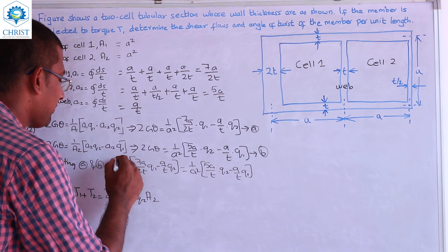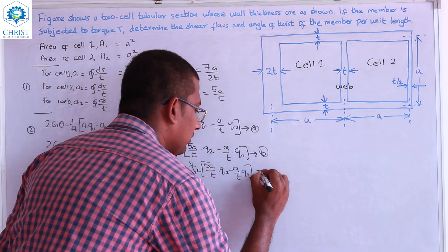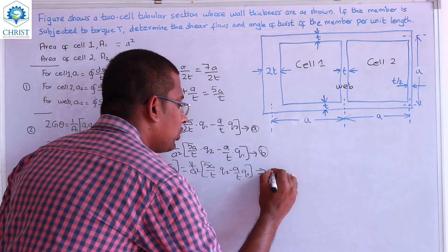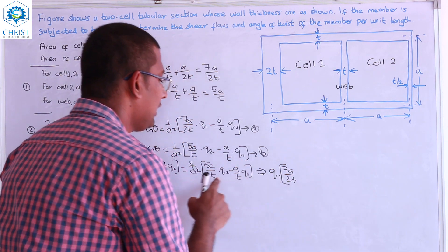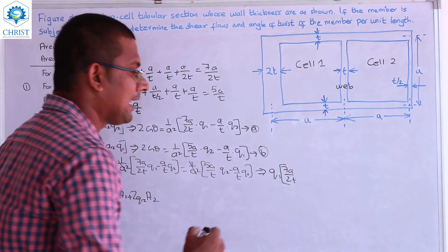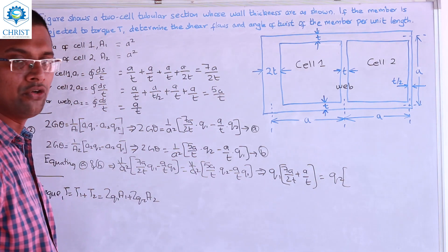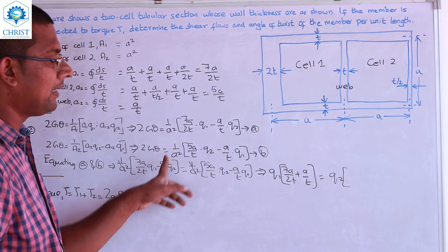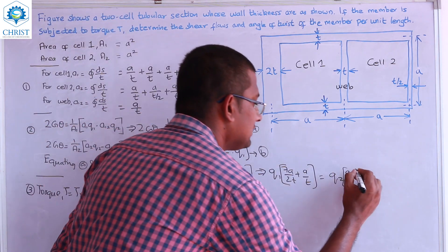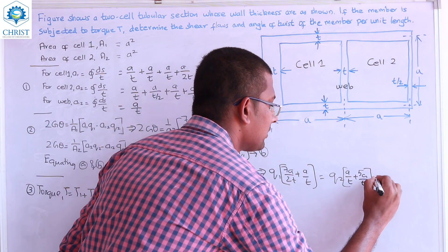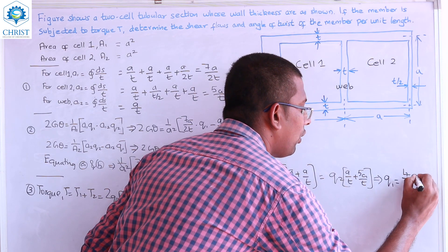Collecting Q1 terms and Q2 terms: Q1 × (7a/2t + a/t) = Q2 × (5a/t + a/t). Simplifying: Q1 × (9a/2t) = Q2 × (6a/t). This gives Q1 = (4/3) × Q2. That is the relationship between Q1 and Q2.